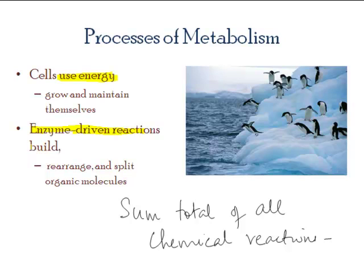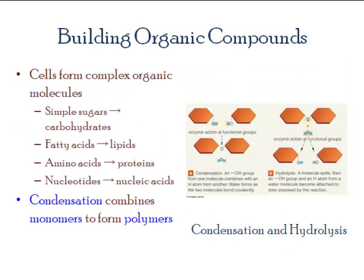Each of these larger macromolecules is derived from something simpler, a precursor molecule. The precursor for carbohydrates would be simple sugars. The precursors for lipids would be fatty acids. Precursors for proteins are amino acids. And the precursors for nucleic acids are nucleotides.